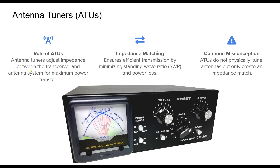Antenna tuners, or ATUs, are essential in ham radio for ensuring efficient power transfer between the transceiver and the antenna. Without proper impedance matching, significant power losses occur, reducing the effectiveness of transmissions. The key function of an ATU is to minimize standing wave ratio, or SWR. A high SWR can lead to power reflections, causing inefficiencies and even damage to equipment over time. The tuner acts as a bridge, making sure the transceiver sees a suitable impedance. A common misconception is that an ATU physically alters the characteristics of an antenna — instead, it simply adjusts the impedance at the connection point, ensuring the system operates effectively.